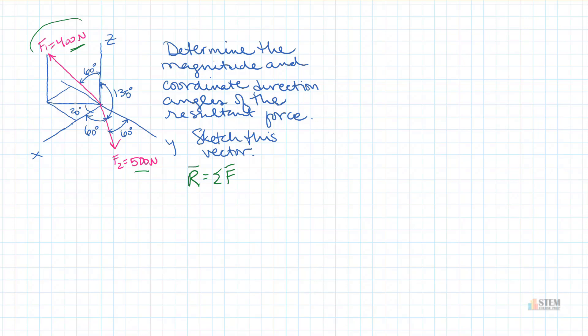For F2, I've got angles between the x-axis, y-axis, and z-axis — those angles go directly to my force. Over here on F1, I don't have that. I've got this 60-degree angle that goes from z to the force, but I don't have an angle that relates my force to the x or y-axis. Instead, I've got this 20-degree angle that relates this diagonal line to the x-axis. So this is going to be one of those transverse azimuth angle type situations.